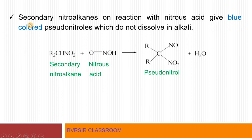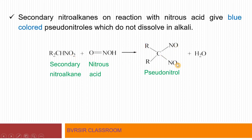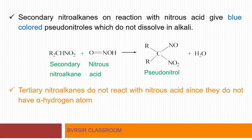Secondary nitroalkanes on reaction with nitrous acid give blue-colored pseudonitrols, which do not dissolve in alkali — that is the key difference. The reaction is: R2CHNO2 + HNO2 → [pseudonitrol] – H2O. The product is called pseudonitrol, and its color is blue. It does not dissolve in sodium hydroxide or potassium hydroxide.